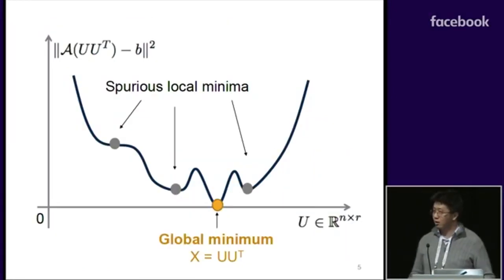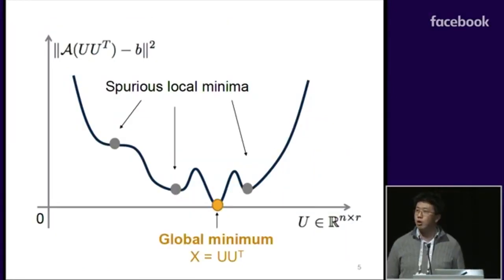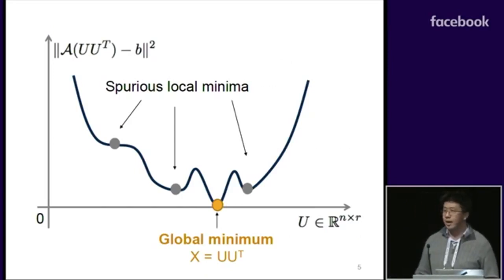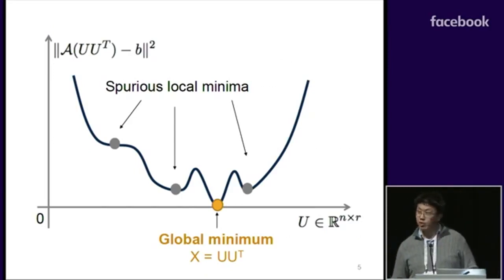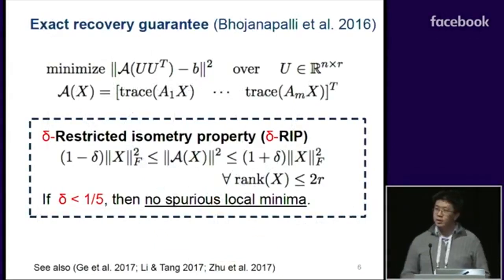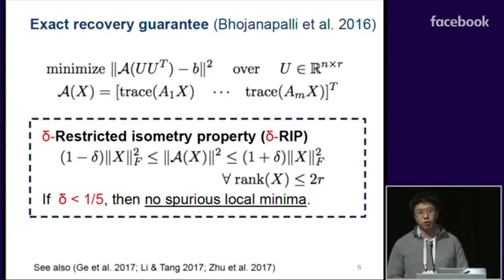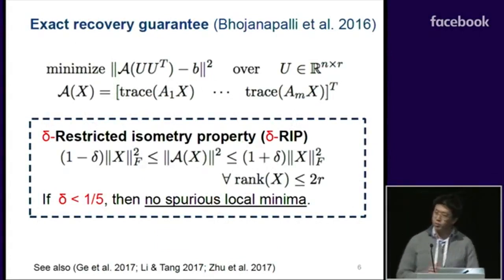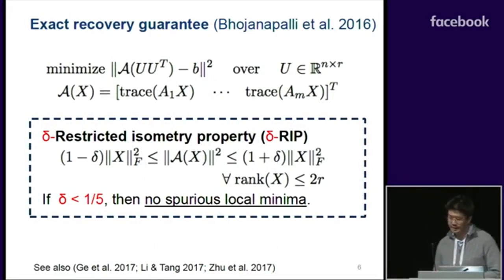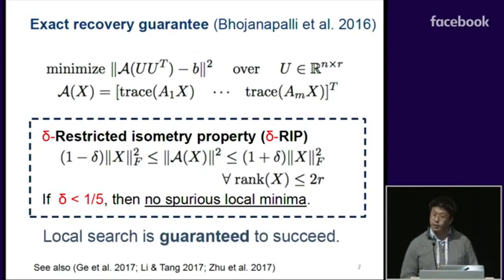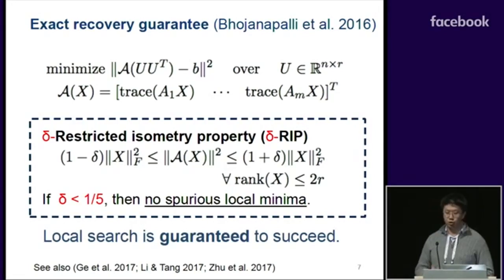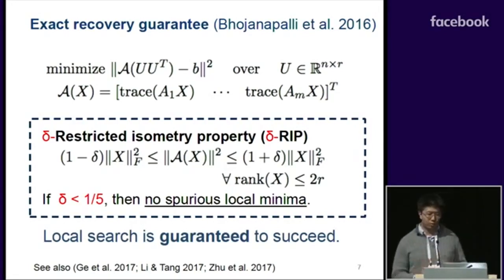This is a non-convex problem, so in general, a local search algorithm can get stuck at a spurious local minimum, and this results in failure. It was a seminal result in 2016 that under a so-called restricted isometry property assumption, or RIP, this problem contains no spurious local minima, and as a consequence, a local search algorithm is guaranteed to converge to the globally optimal solution.